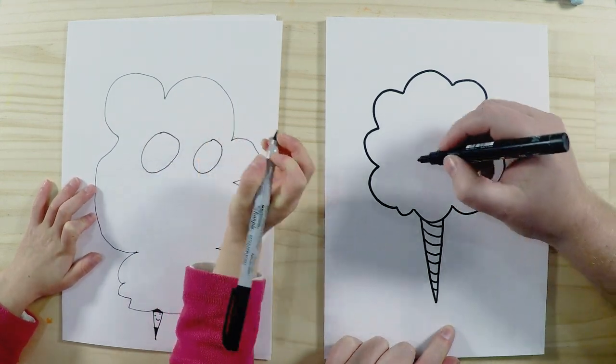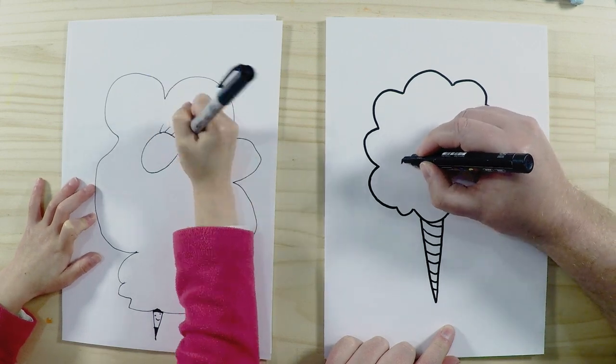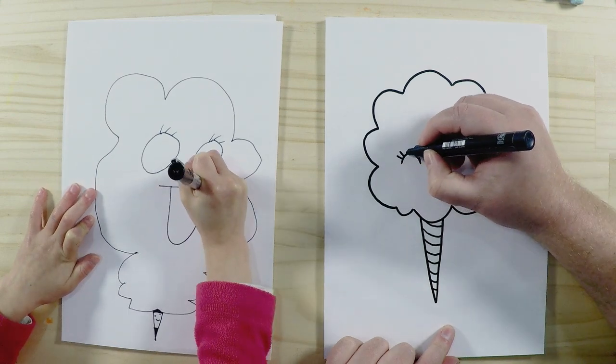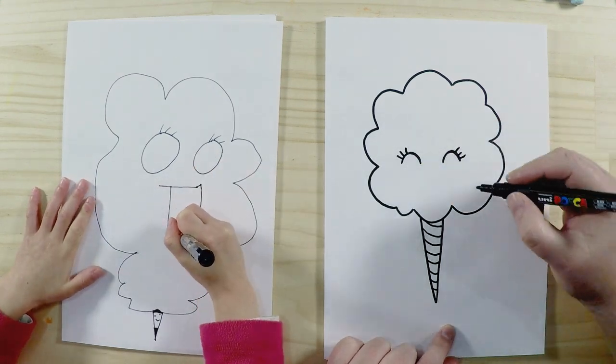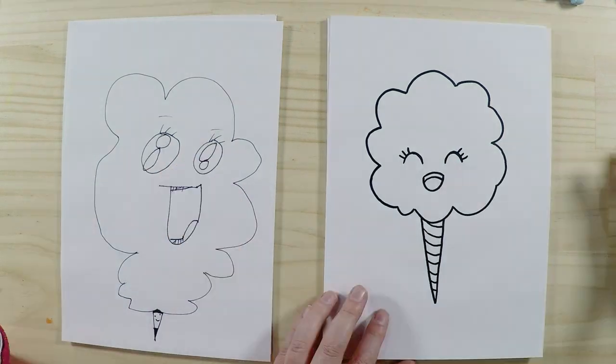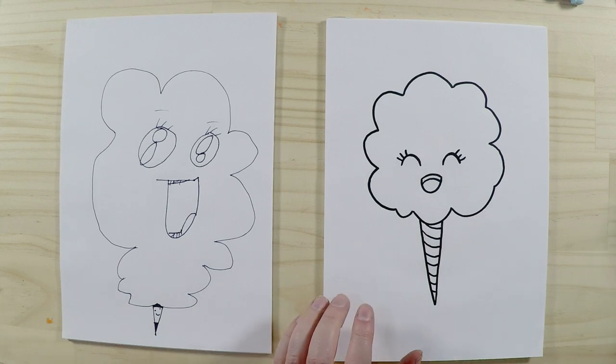Or whatever you like. What I'm going to do is make mine a very happy candy floss. I'm just going to draw some closed eyes like this, make it some eyelashes, and then a nice big smile just like that. And that's our candy floss! The next thing is to color it in.